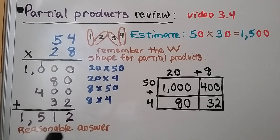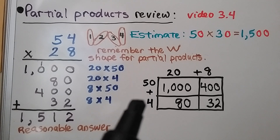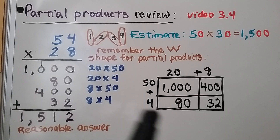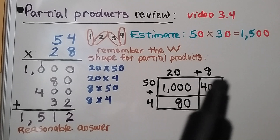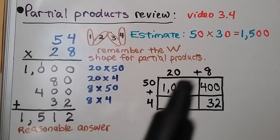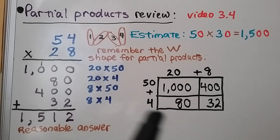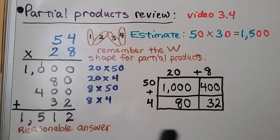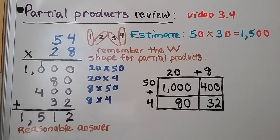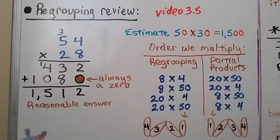We can check our work by drawing a model. We break the 54 into 50 plus 4 and the 28 into 20 plus 8. So we know we needed to multiply 20 times 50, 20 times 4, 8 times 50, and 8 times 4 — and we did, so we know we did it correctly.